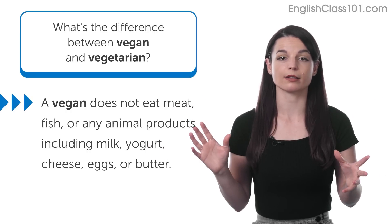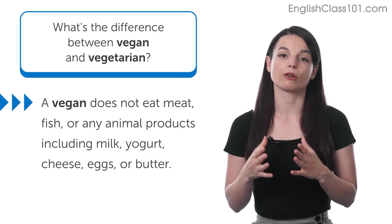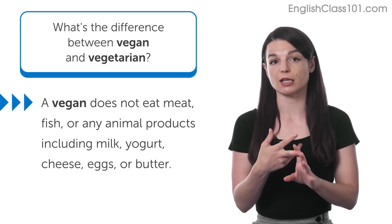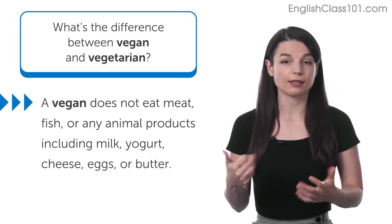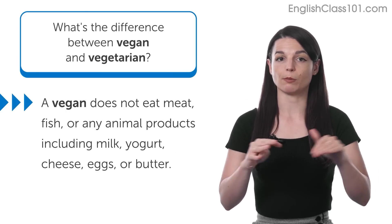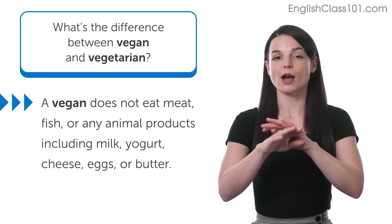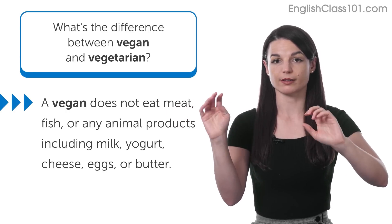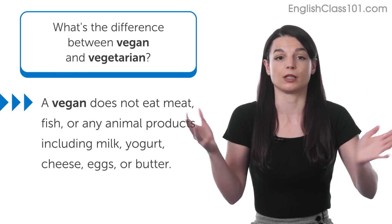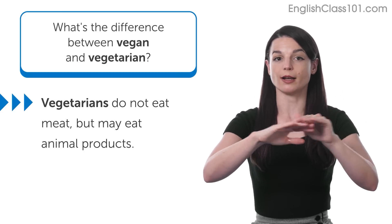A vegan, on the other hand, or a meal that is vegan, uses no animal products at all. When I say animal products, I mean of course meat and fish, but also things that come from animals — so that means dairy, like milk, yogurt, cheese, butter, and also eggs. Things that come from animals are not consumed by people who are vegan. So people who are vegan do not consume any animal products at all, though some people might choose to do it every once in a while — it's up to individual preference. And people who are vegetarian simply do not eat meat.